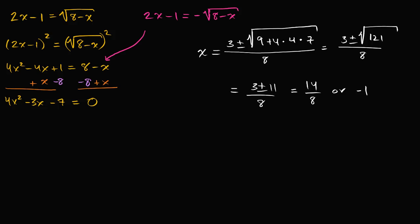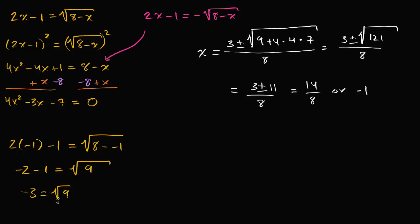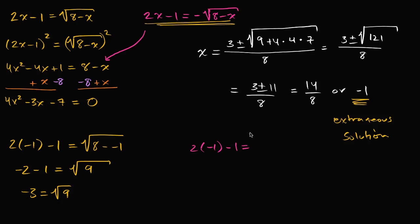Let's try x equals negative one. We'd have two times negative one minus one equal to the square root of eight minus negative one, so negative two minus one equals the square root of nine — that gives negative three equals three, which is not true. So x equals negative one is an extraneous solution. It actually satisfies the alternate equation where 2x minus one equals the negative square root of eight minus x, since negative three equals the negative of three checks out. So x equals 14 over 8 is the actual solution to our original equation — I encourage you to verify it yourself.